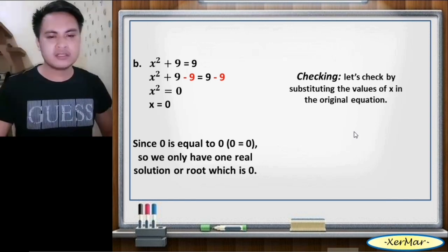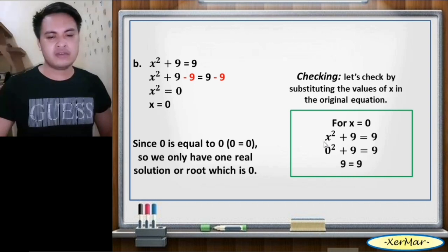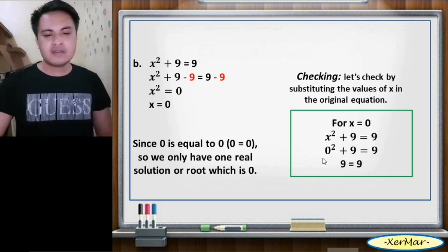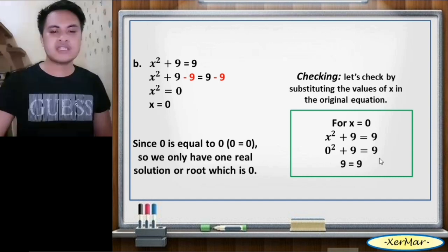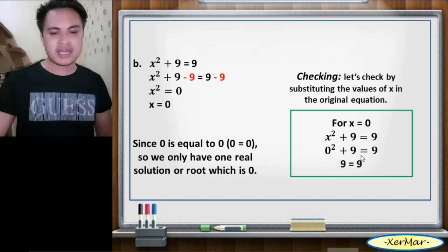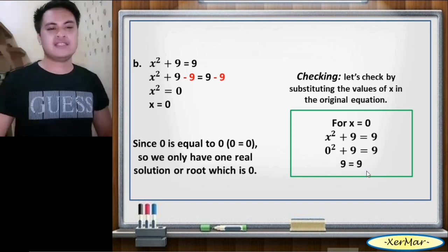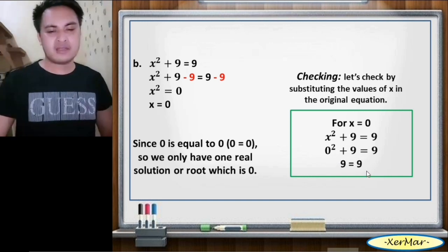To check for x equals 0: original equation x squared plus 9 equals 9. So 0 squared plus 9 equals 9 → 0 times 0 is 0, plus 9 is 9 → 9 equals 9. Check.